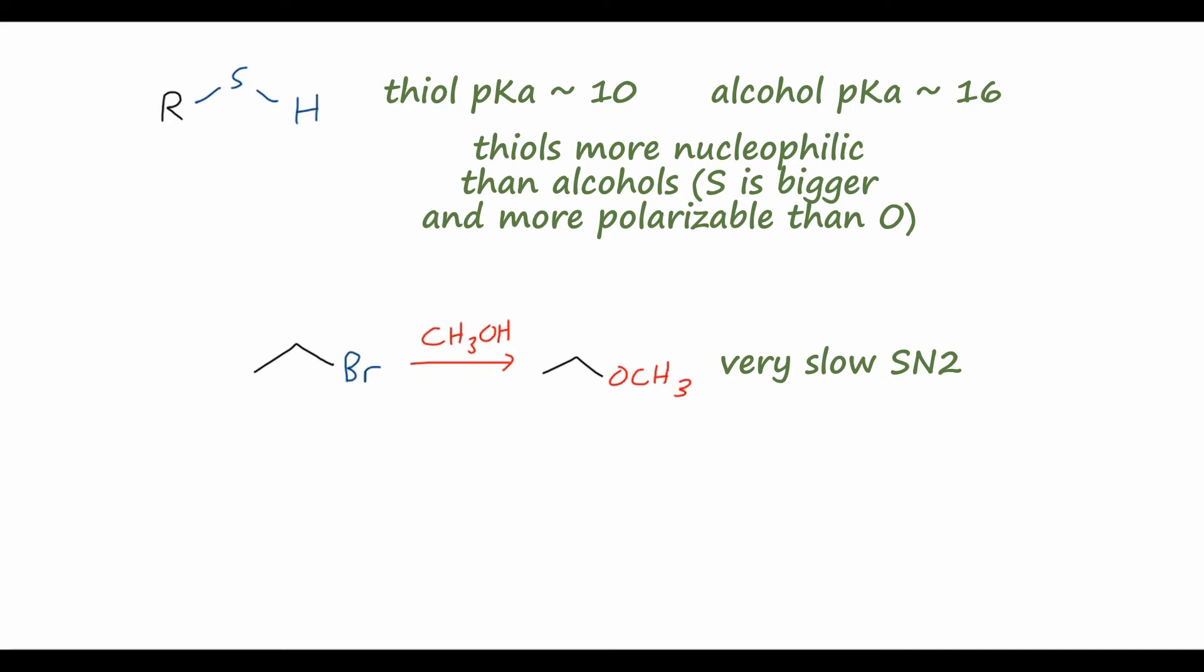Whereas if we take the same electrophile, ethyl bromide, and react it with methane thiol, in this case, to form this thioether, or sulfide, this reaction will be much faster, because sulfur is a much bigger atom like I said, and therefore the methane thiol will be a better nucleophile.